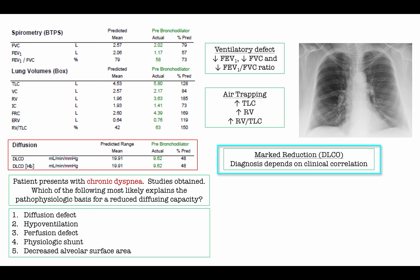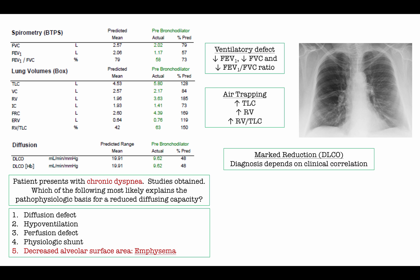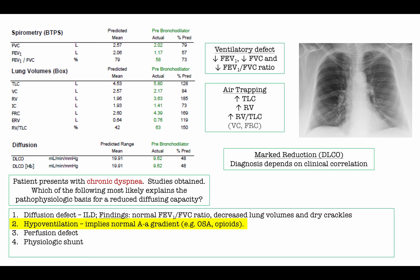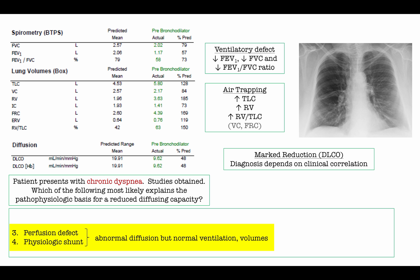Looking at these findings in composite, we can deduce the patient has emphysema — these are classic PFTs. When the USMLE lists diffusion defect, they are specifically asking about diseases of the interstitium. In interstitial lung disease, we expect low FEV1, low FVC, but the hallmark is a normal ratio as airways remain patent, with decreased lung volumes and velcro-like crackles. Primary hypoventilation patients have a normal A-a gradient — the lungs are fine, with obstructive sleep apnea and opioid use being prototypic. Pulmonary vascular disease can cause diffusion abnormalities but not ventilation or lung volume problems as seen here.